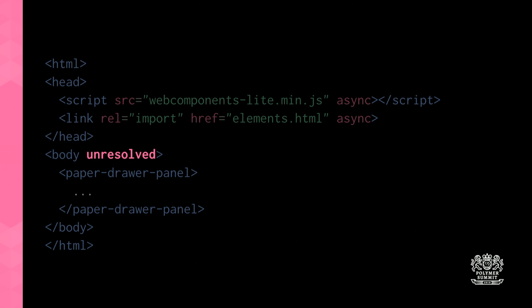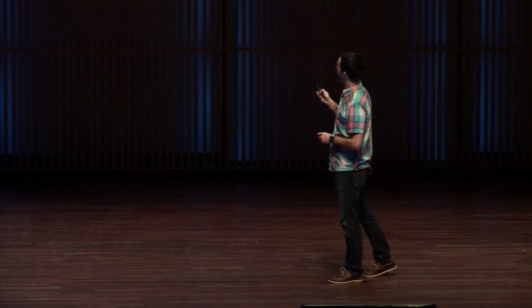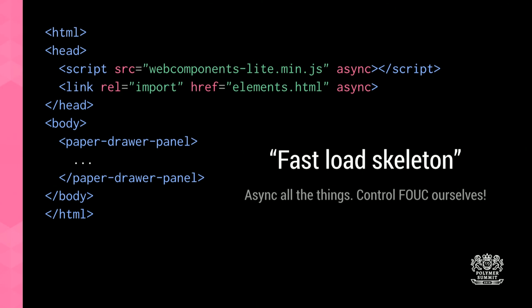The last thing to make this scaffold fast is to remove the unresolved attribute. Unresolved is a Polymer feature that hides the page until all elements are ready, but it means showing the user a blank screen for a long time. If you remove it and use async on both resources, your markup renders right away and gets upgraded when those resources come through. This is the fast loading scaffold: async the imports, async the script tag, and remove the unresolved attribute.